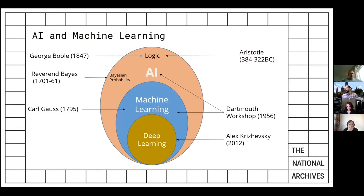This slide is about where machine learning fits into the much bigger field of AI, which comprises things including logic, probability, and machine learning — and within machine learning, deep learning. Some surrounding items give historical perspective, because although the term AI was first coined in 1956, you can trace some of its roots all the way back to Aristotle in ancient Greece.